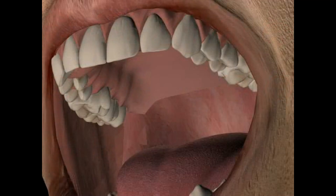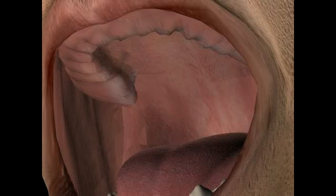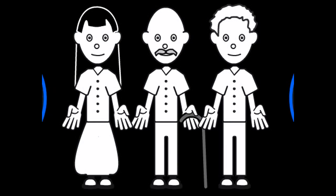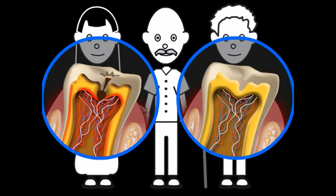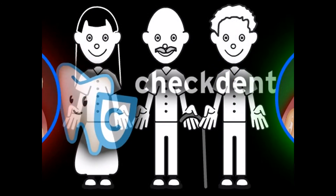The frontal teeth are overly strained. And by age 60, a total prosthesis will likely be unavoidable for a typical individual. Regular oral hygiene, quality dental work and information prevent the formation of caries. You have something to smile about for years with CheckDent.com.